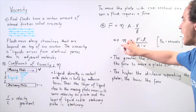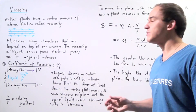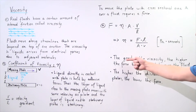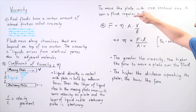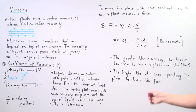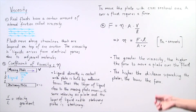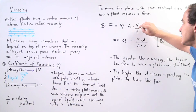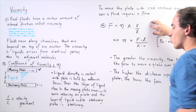The coefficient of viscosity has the unit pascals multiplied by seconds. From this equation, which is derived experimentally, we see that the greater the viscosity, the higher the force required to move the plate over that fluid with a cross-sectional area A. We also see that the higher the distance separating our two plates — the stationary plate and the moving plate — the lower the force. The higher the cross-sectional area and the higher the viscosity, the higher the force.